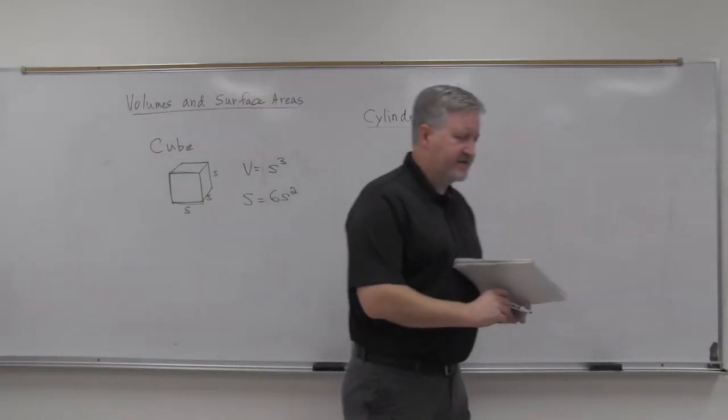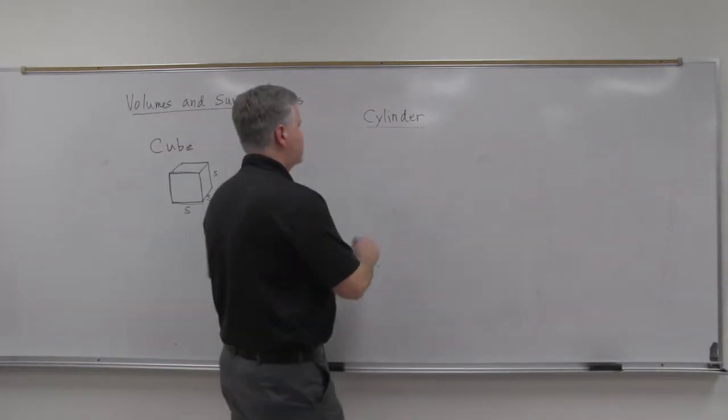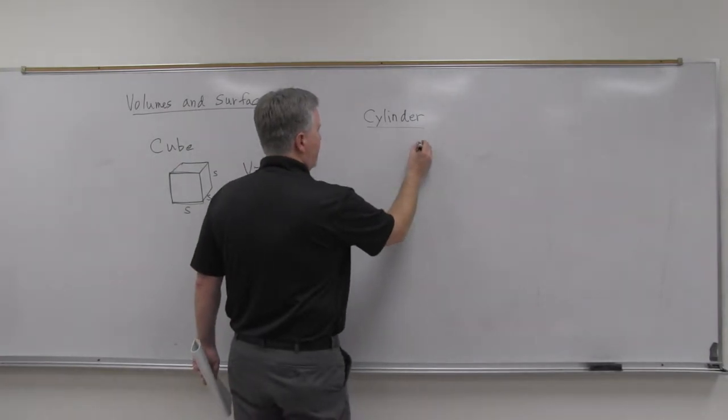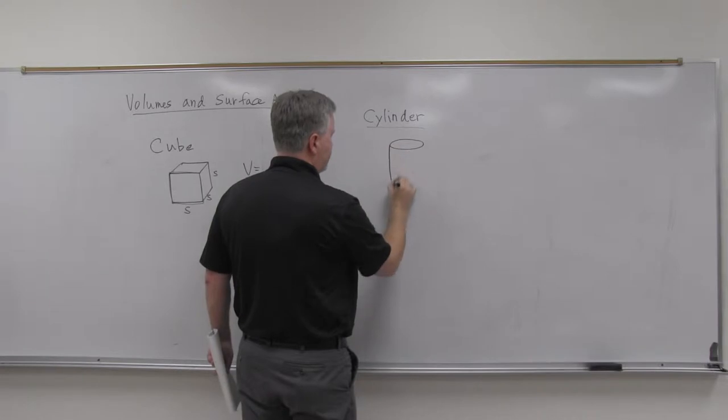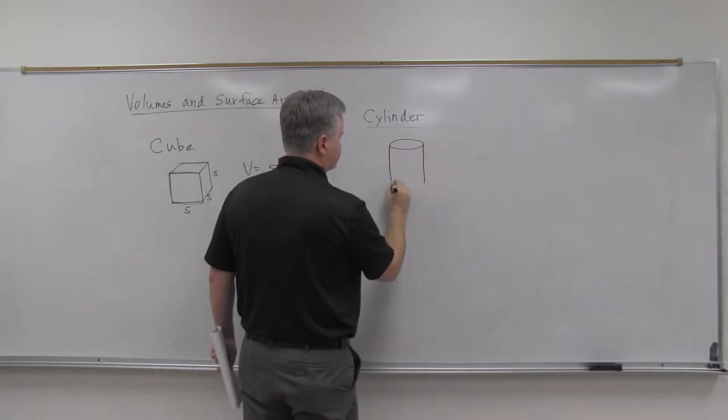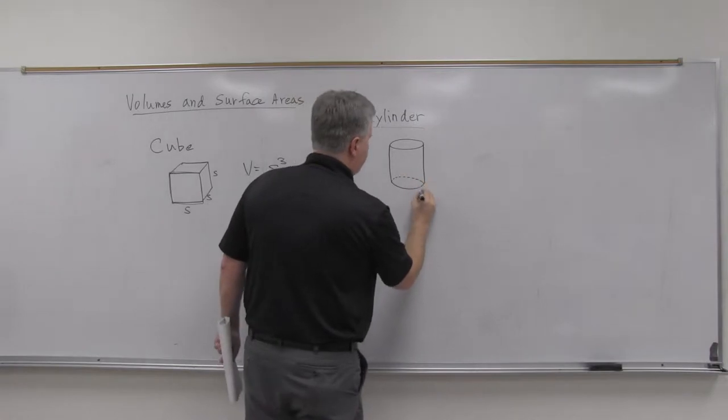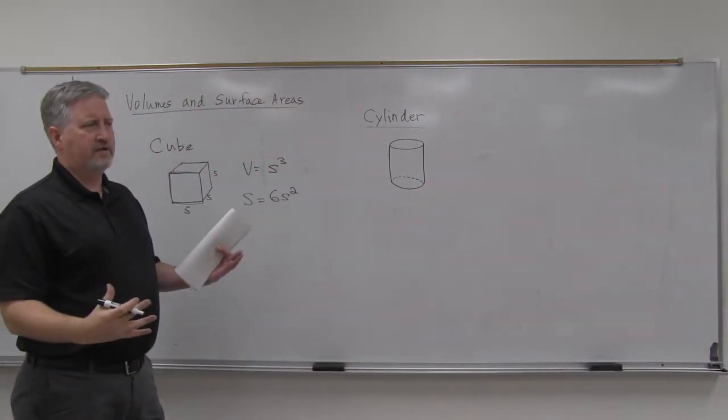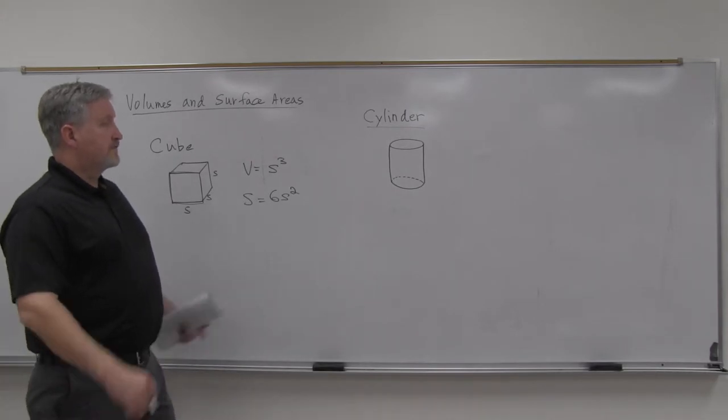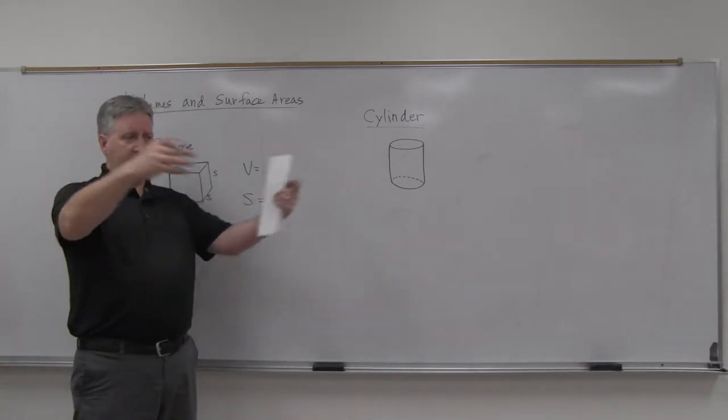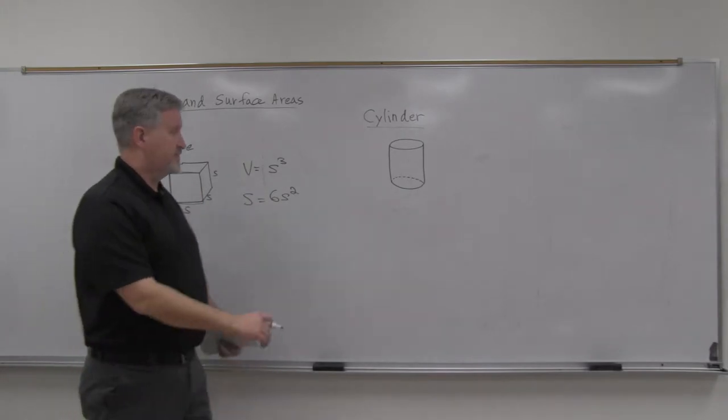When we have a cylinder, we've got the top is a circle, and then that goes down, and then we also have a circle, a congruent circle for the base as well. So I've got two circles, top and bottom, and then I've got the rest of the can, the rest of the cylinder.